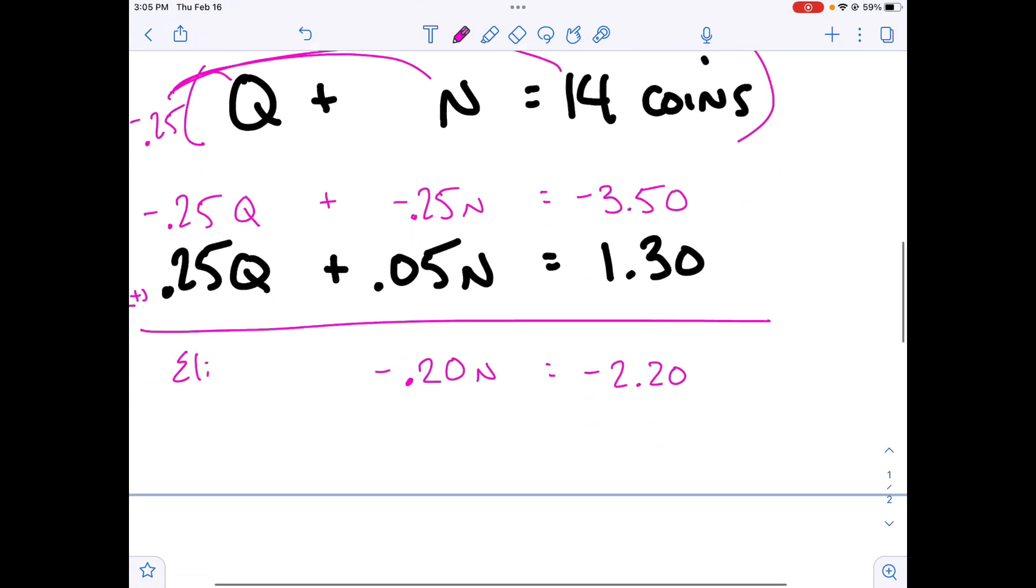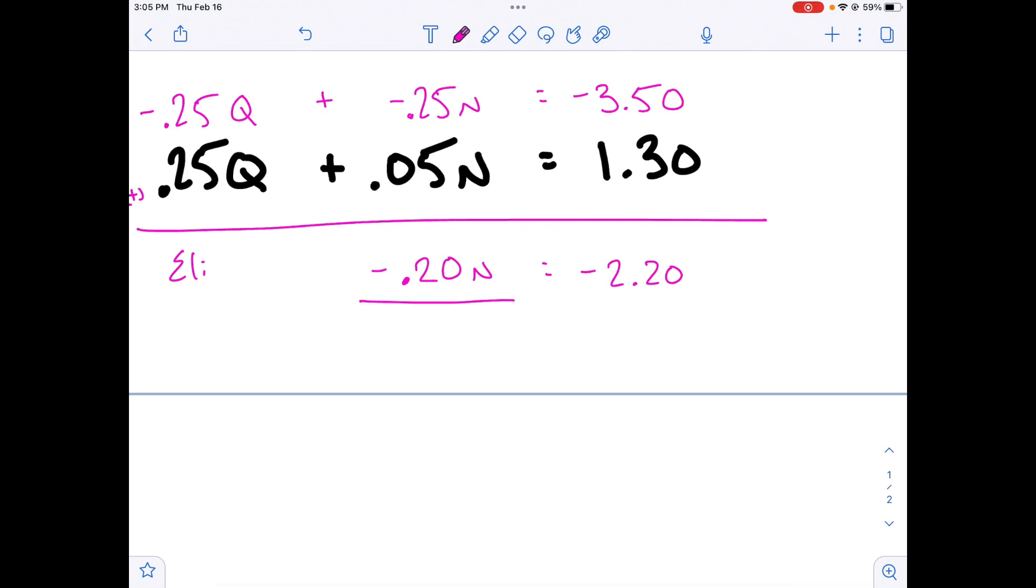So now, I'm going to solve for N, which is the number of nickels. I'm going to divide by 0.20 or the negative 0.20. And the number of nickels, calculator if you need it, is 11.